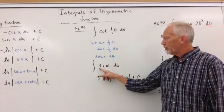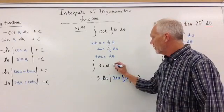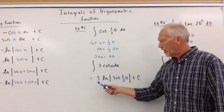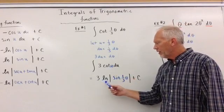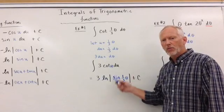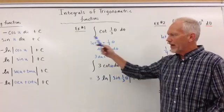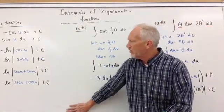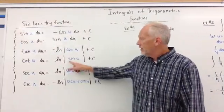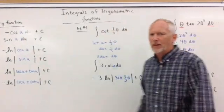That means we have three cotangent of U, dU. And in that case, we have three ln of sine of one-third theta, absolute value bars plus C. So anytime we go back to the cotangent U, remember cotangent of U was ln of sine of U, absolute value plus C. So that's where we get there, example number one.